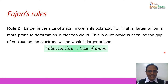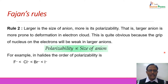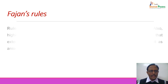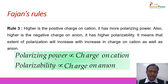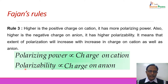Polarizability of the anion is directly proportional to the size of the anion. For example, among halides, the F⁻ ion has minimum polarizability due to its smaller size, while the iodide ion has the highest polarizability due to its largest size. Third, higher positive charge on the cation gives it more polarizing power, and higher negative charge on the anion gives it more polarizability. Polarizing power of the cation is directly proportional to the charge on the cation, and polarizability of the anion is directly proportional to the charge on the anion.